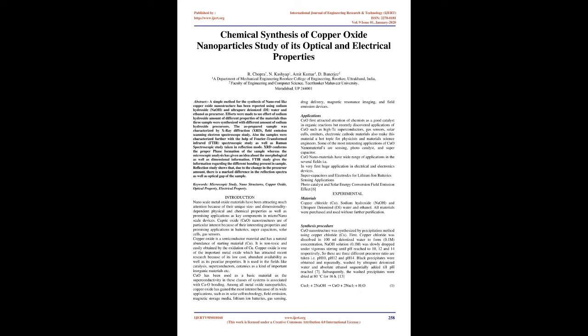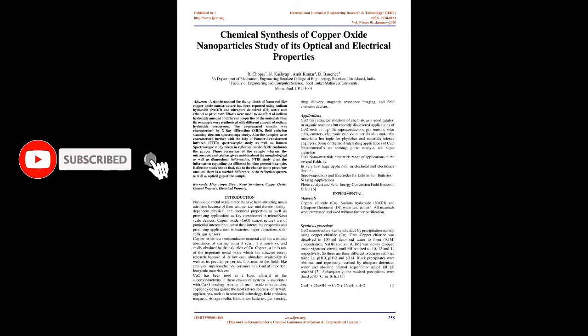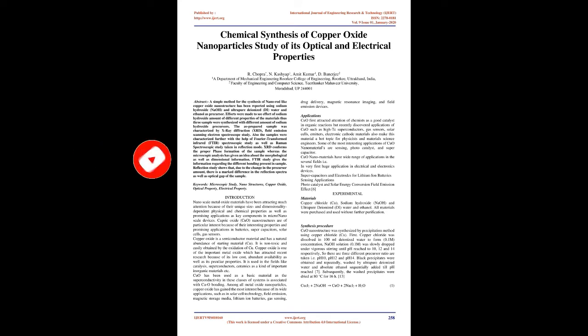Introduction: Nanoscale metal oxide materials have been attracting much attention because of their unique size and dimensionality-dependent physical and chemical properties, as well as promising application as key components in micro/nano-scale devices. Cupric oxide nanostructures are of particular interest because of their interesting properties and promising applications in batteries, supercapacitors, solar cells, and gas sensors.